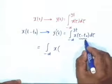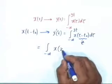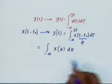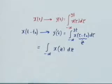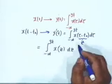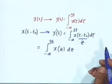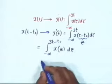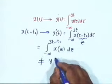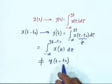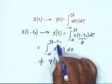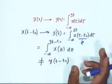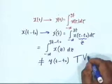Substituting Z = tau − T0, we get the integral of X(Z) dZ with upper limit 3T − T0, not 3(T − T0). This is not equal to Y(T − T0), whose upper limit should have been 3(T − T0). Therefore the output is not of the same shape, and the system is time-varying. You have to be very careful about testing time invariance.